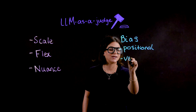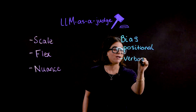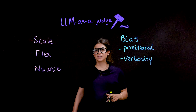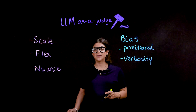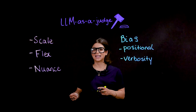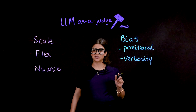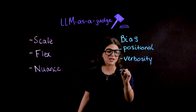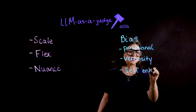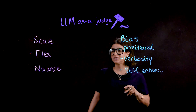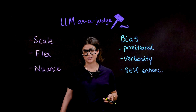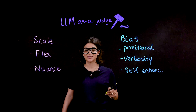There's also verbosity bias. This happens when an evaluator continuously favors output that is longer, regardless of its quality. The longer output can be repetitive or go off track, but the model will continuously favor it because it sees length as quality. There's also the case where a model might favor an output because it recognizes that it created the output — this is called self-enhancement bias. If a model continuously favors an output that it created itself even when the content is not necessarily better, that is self-enhancement bias.